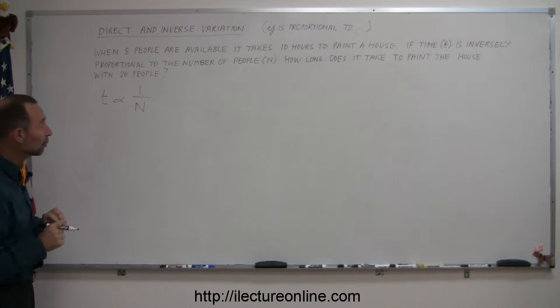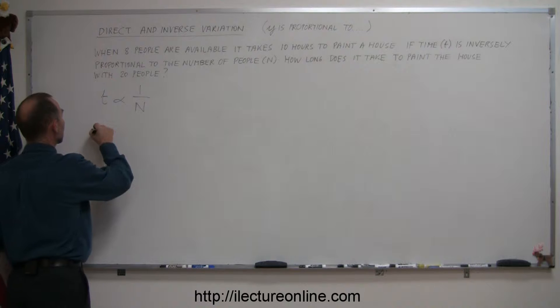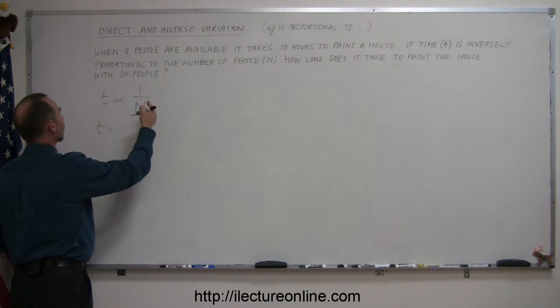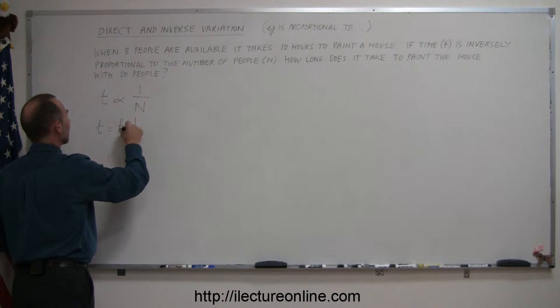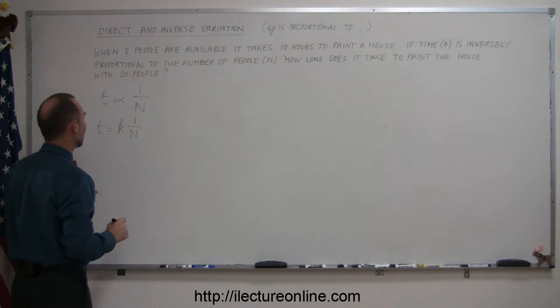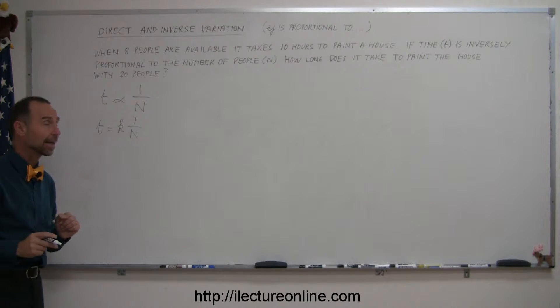Now we want to turn that into an equation. To do that we write t equals, and of course we then have to introduce a constant of proportionality k times 1 over n. And now we have to figure out what this value of k is.